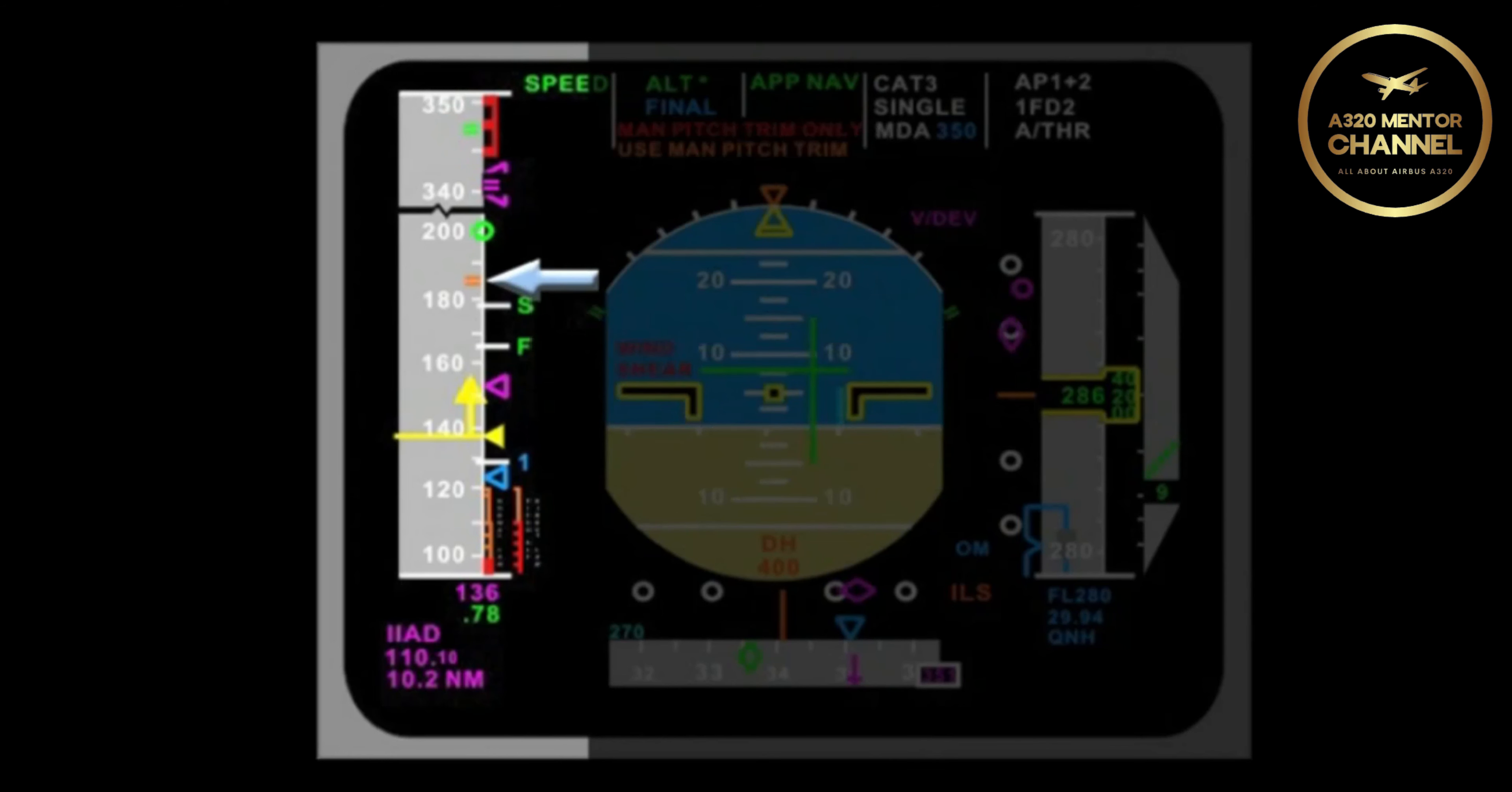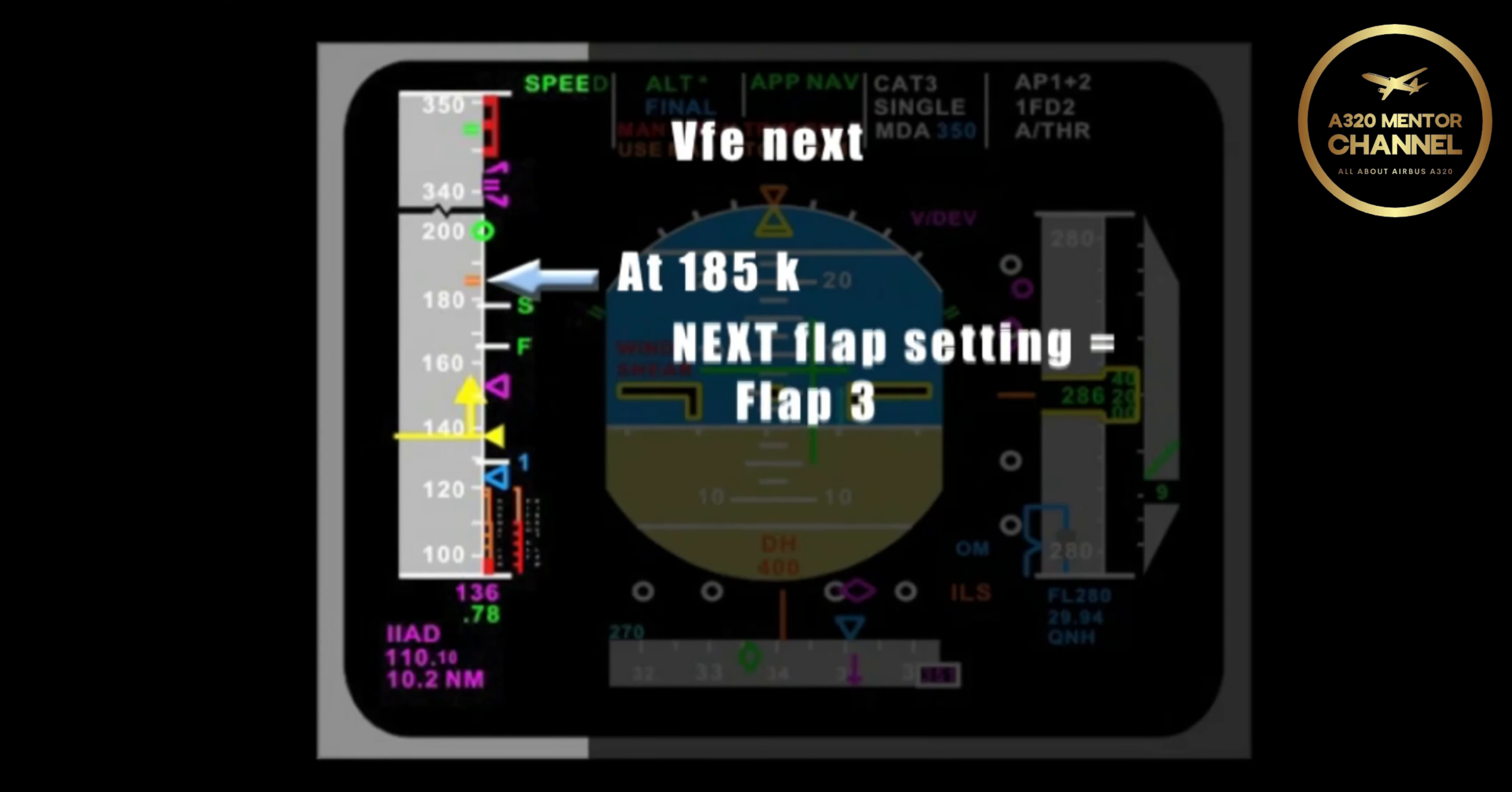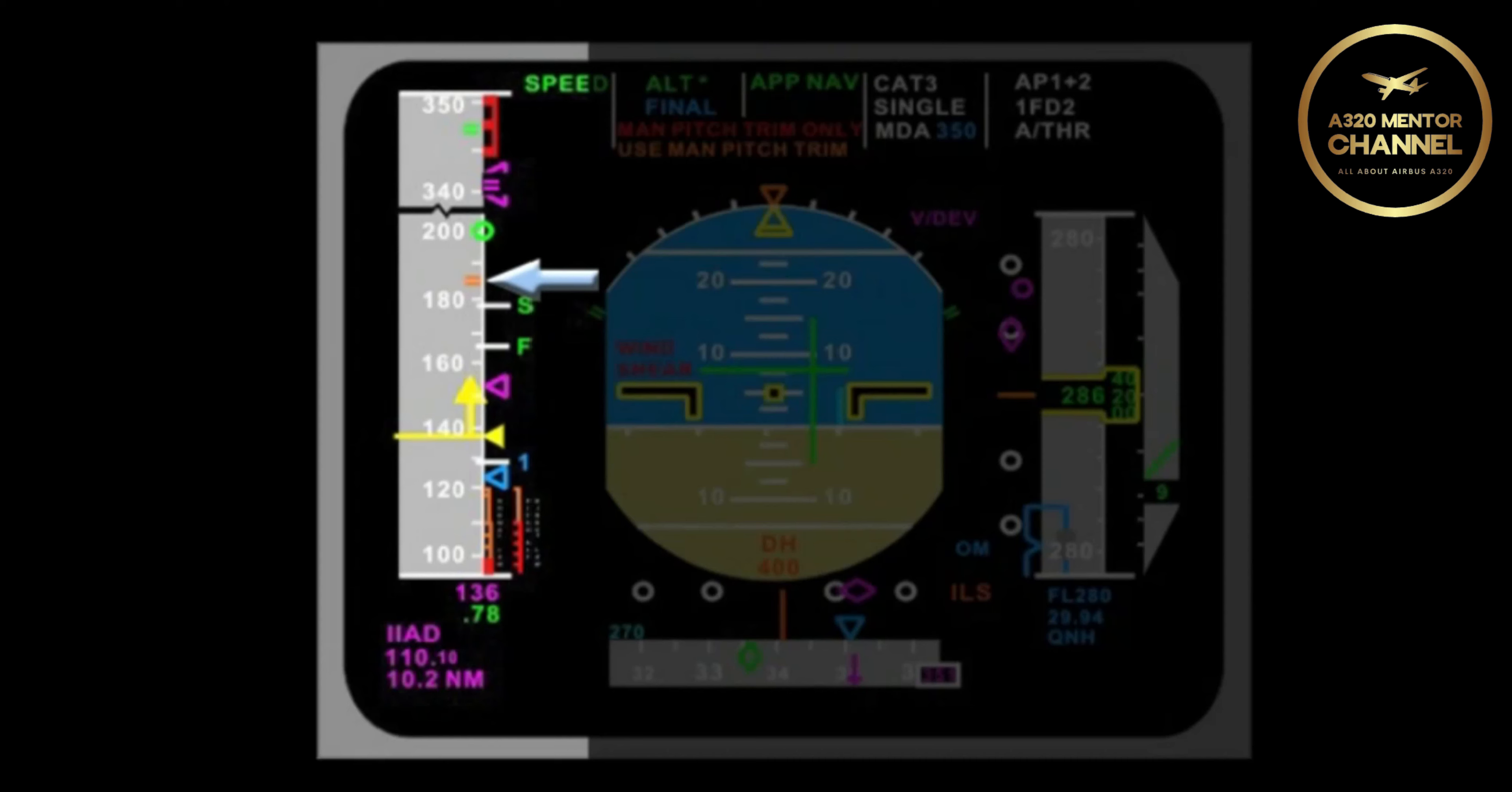What does this amber tick mark represent? VFE next. The next maximum flap extension speed. This tick mark is displayed at 185 knots. What is our current flap configuration? At 185 knots, the next flap setting would have to be 3. That means the current flap setting would be 2.